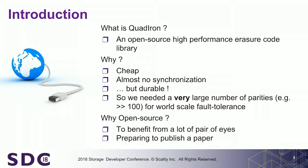We wanted to build a storage system which was cheap, with almost no synchronization, durable. And we needed a very large number of parities — a number much larger than 100. Typically in storage you find 10+4 or 20+10, and we wanted something even larger. We tried to find a library and we didn't find one, so we decided to do some research and make it. We decided to be totally open source because this is our contribution to the community. We didn't want yet another patented library on erasure codes — we wanted to research and give back to the community.